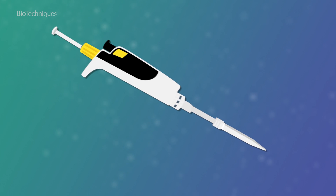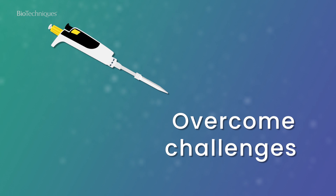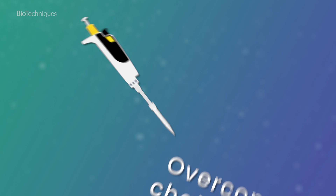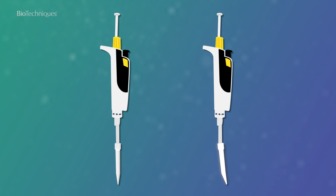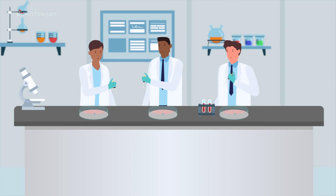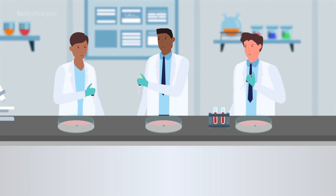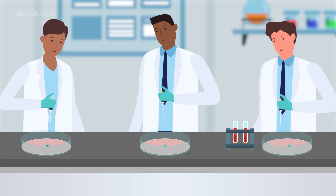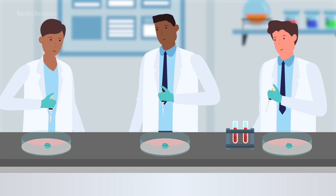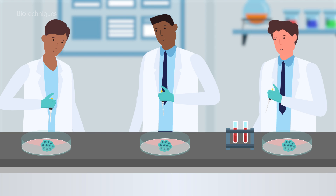There are a number of steps you can take to overcome the challenges faced when pipetting 3D cell cultures. Ensuring that the pipette tip fits optimally to the pipette will help you achieve the best results. Another step is the use of electronic pipettes. With electronic pipettes, you can use fixed pipetting speeds and mixing steps, consequently minimising the variability introduced by individual pipetting practices.